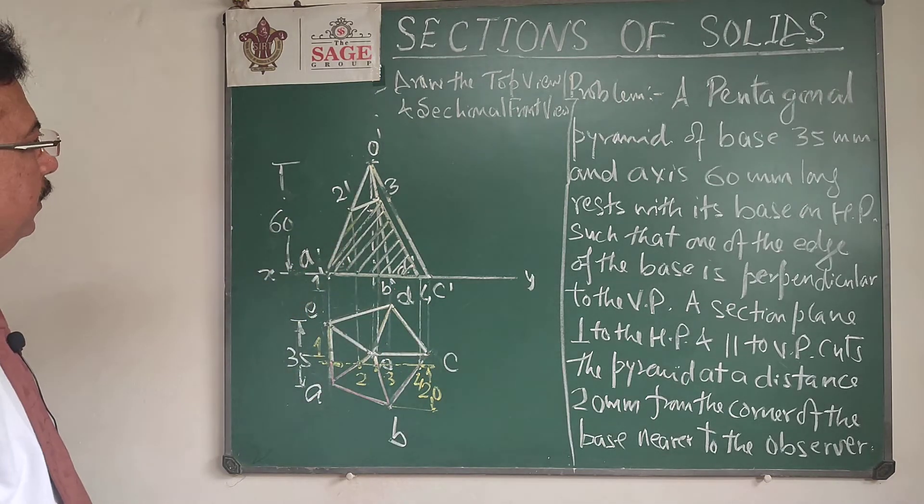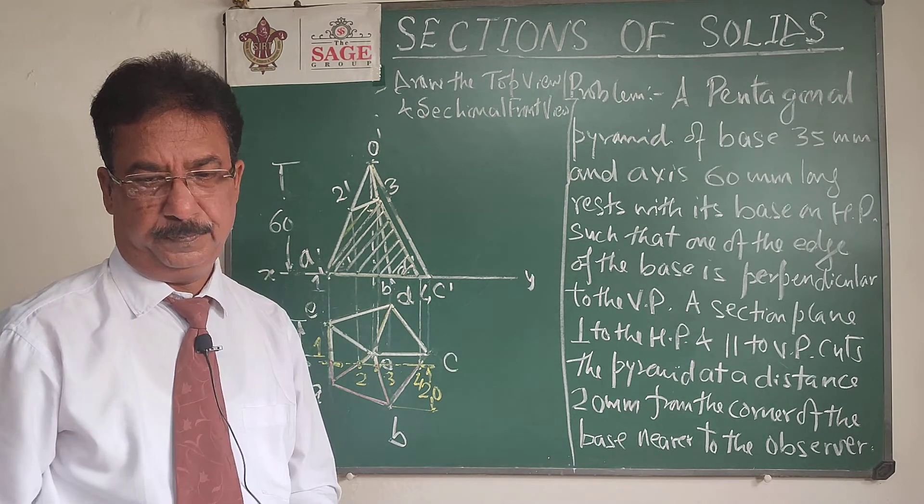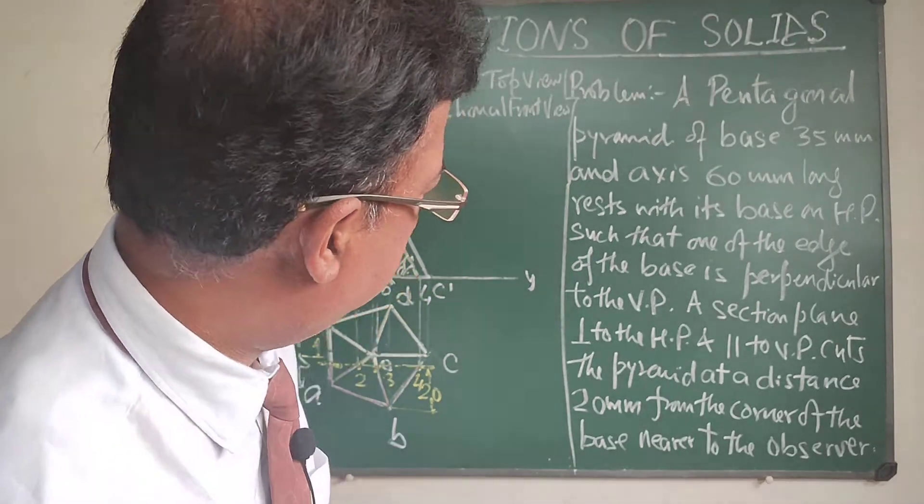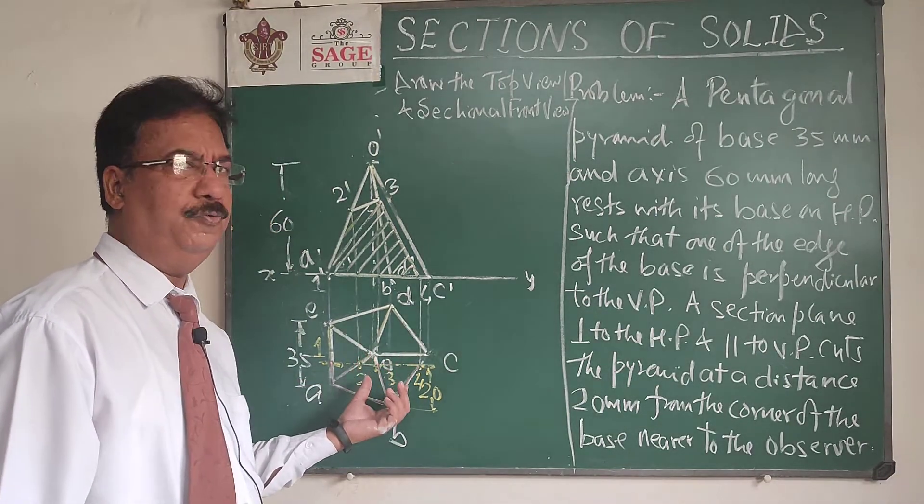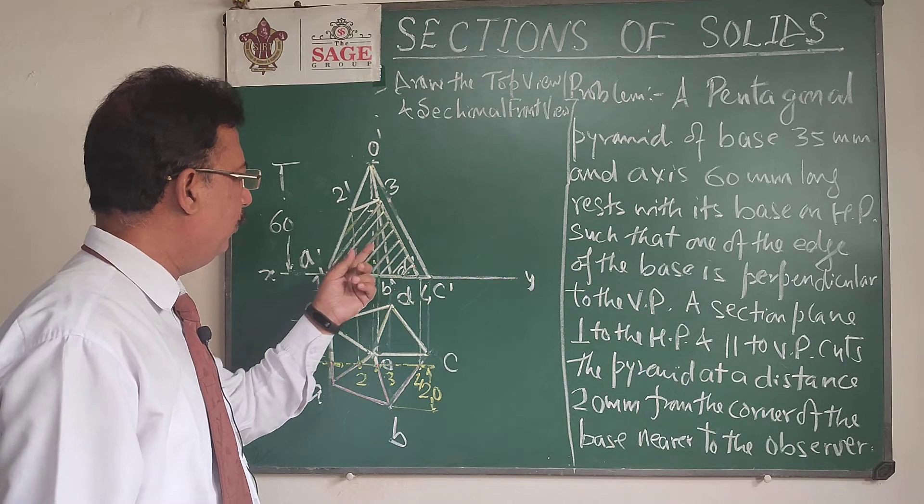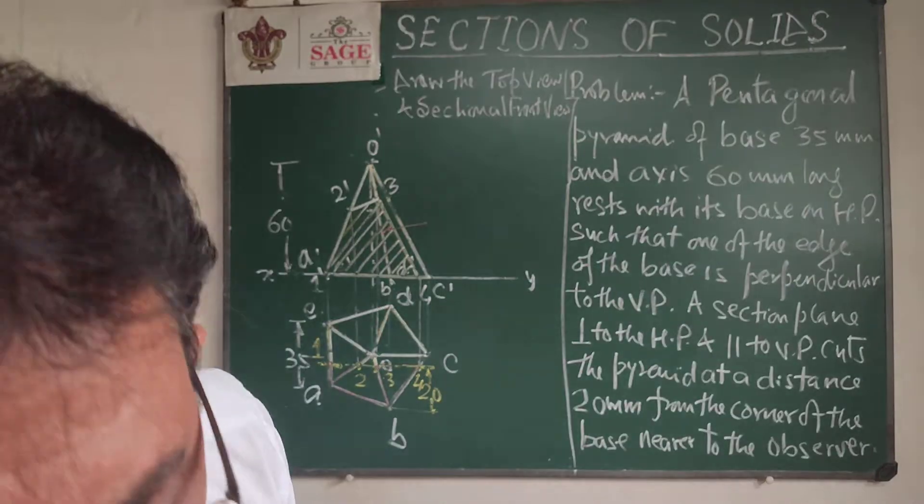So we will get the sectional front view and top view. I hope that this is a very simple problem. And as you see that the cutting plane will be parallel to VP, so in the front view, the shape we got, that will be the true shape of the section.